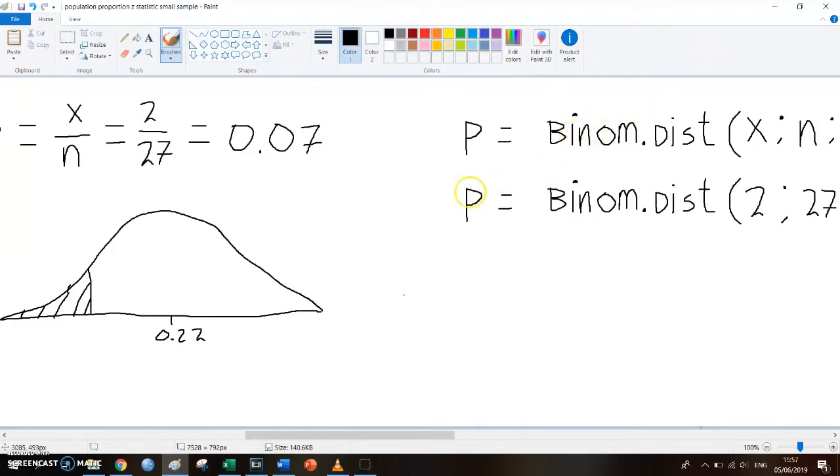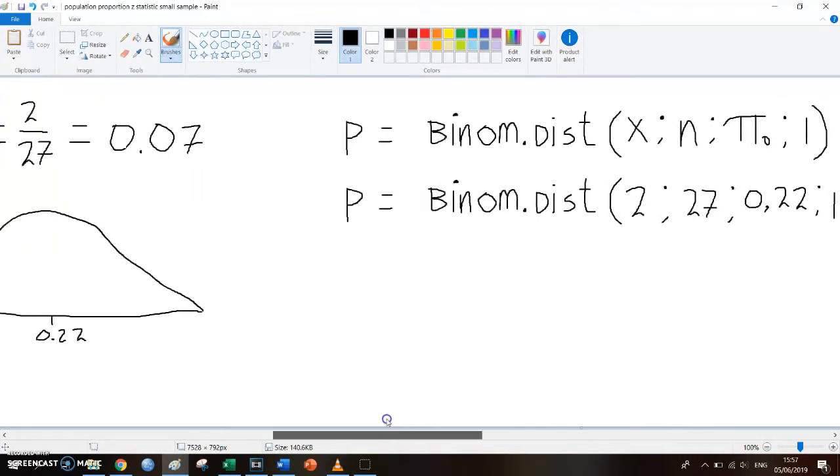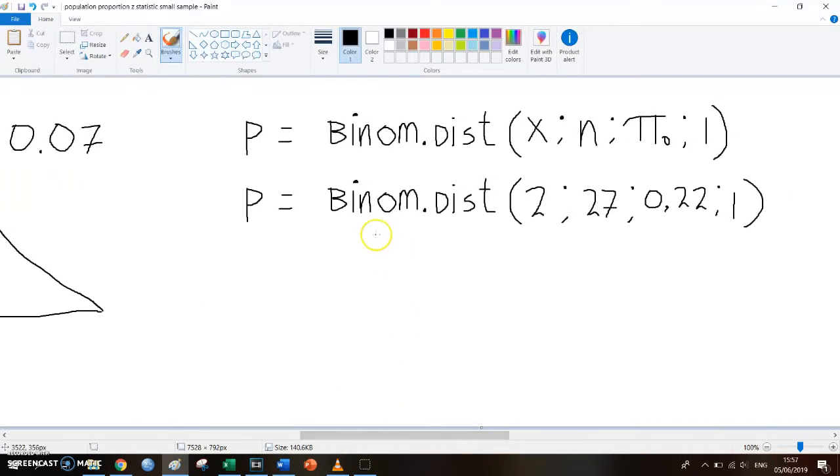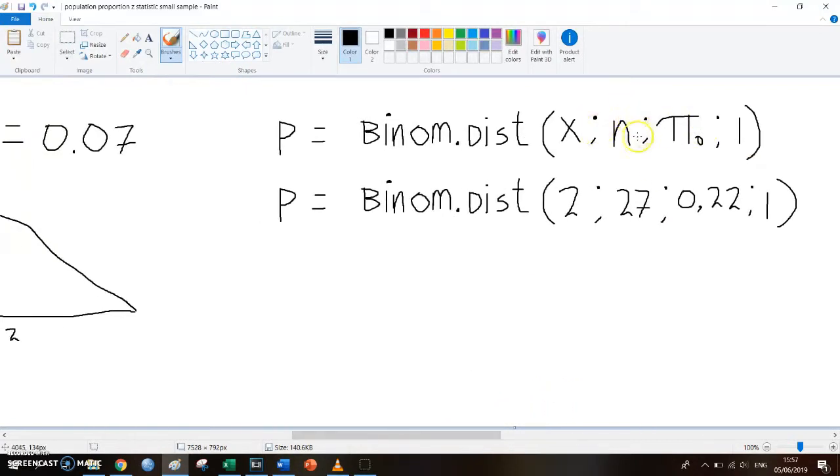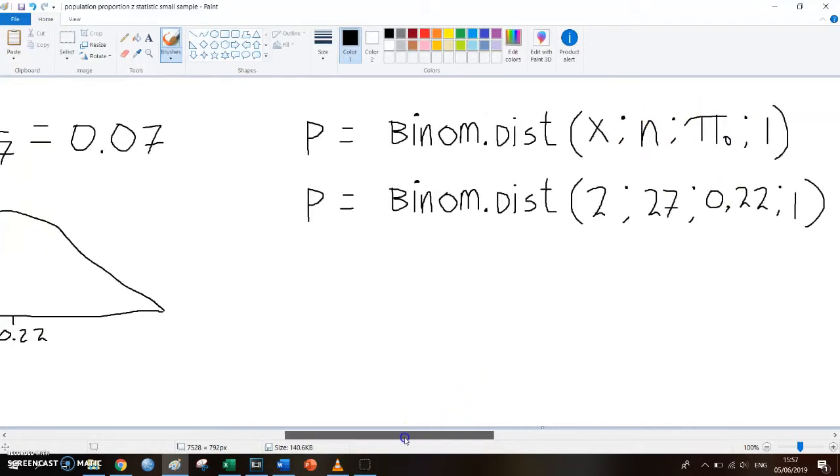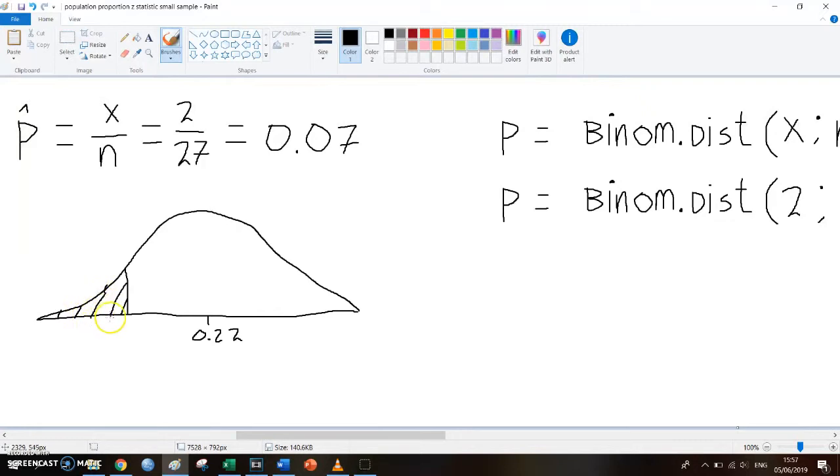So you can calculate the p-value by doing BINOM.DIST and then between brackets: the x, so the amount of times you won, which is 2; the n, which is the total amount of trials, which is 27; the population proportion, which was 0.22, but in Excel I use a comma; and then it always ends with 1, which is the fourth number, and you use semicolons between those different numbers.